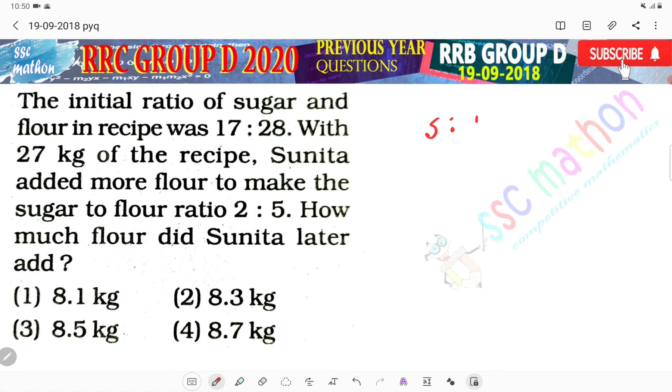So sugar is to flour, what ratio was 17 is to 28. If total was 27, what formula? Sugar and flour required earlier, then flour added.